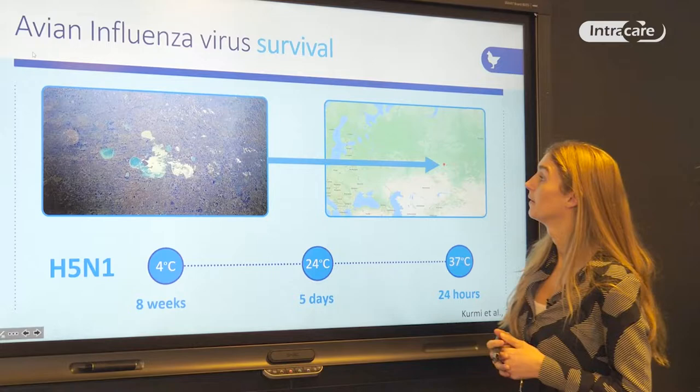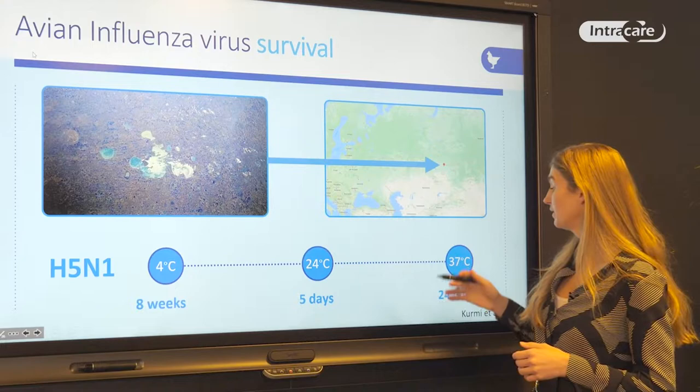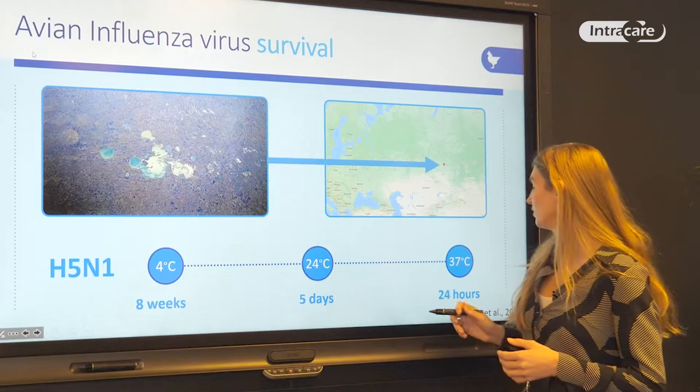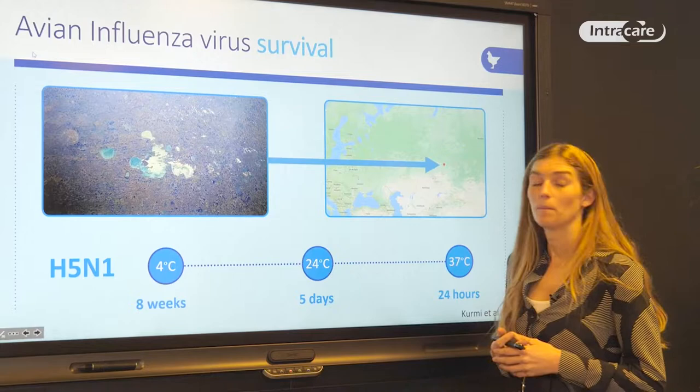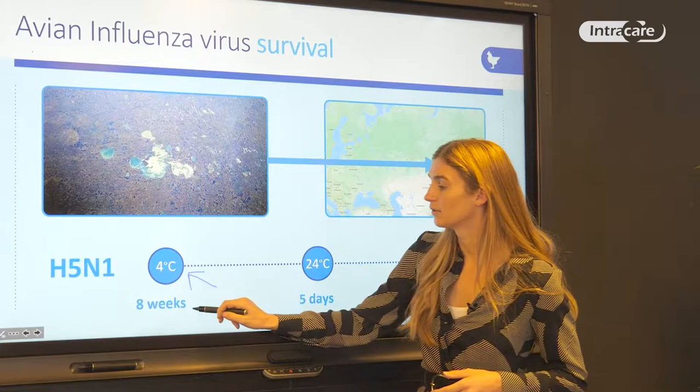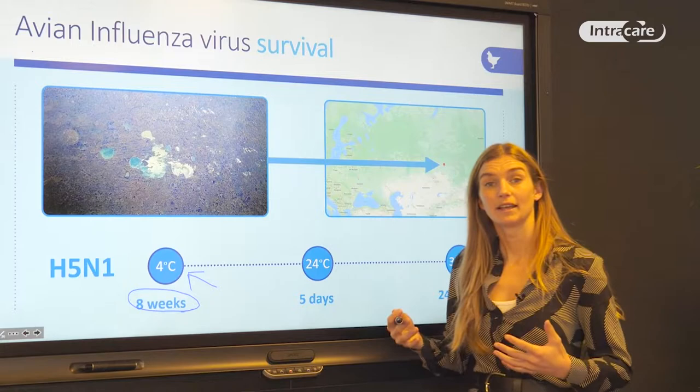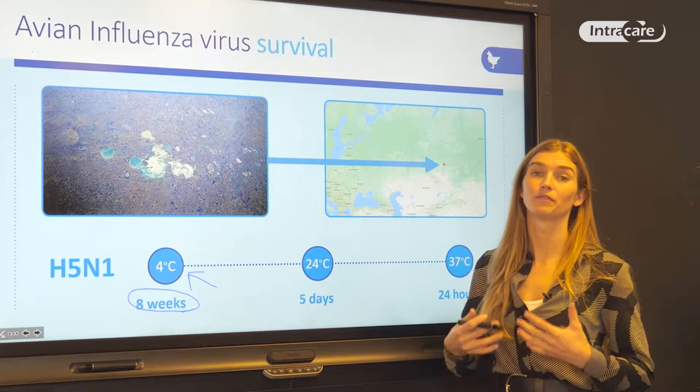At 37 degrees, the avian influenza virus survives for about 24 hours, retaining its infectivity. But when the temperature decreases to 4 degrees, the survival time increases to 8 weeks. The virus can survive even longer at lower temperatures — when frozen, it can be retained for several months, maybe even years.